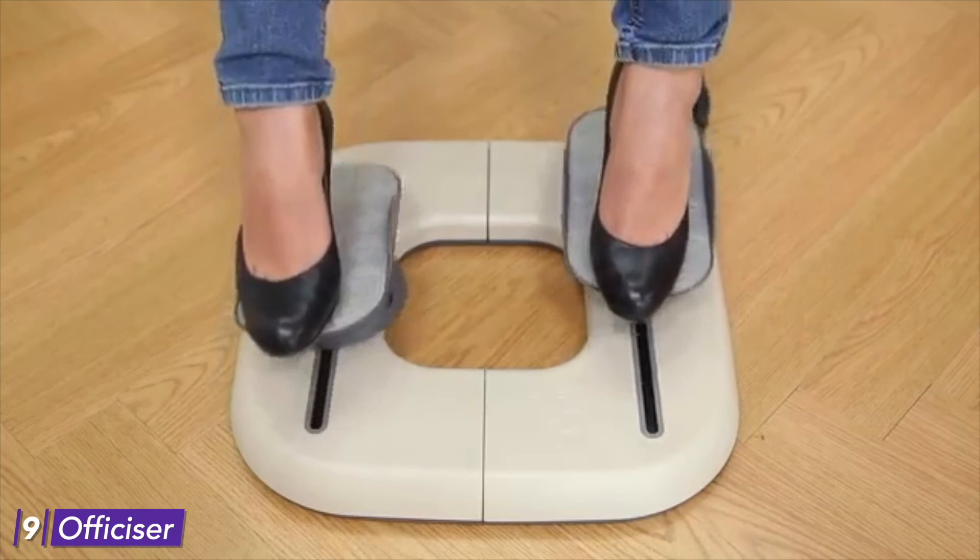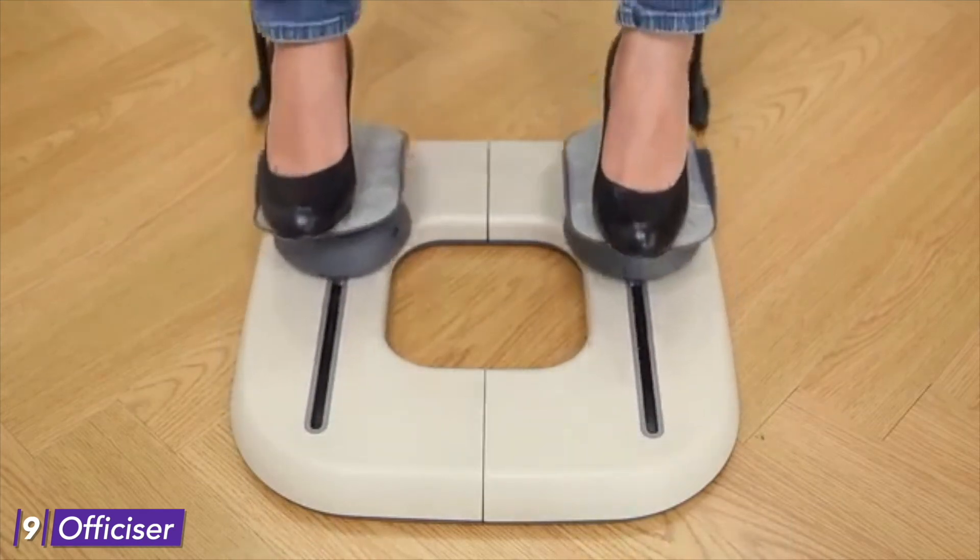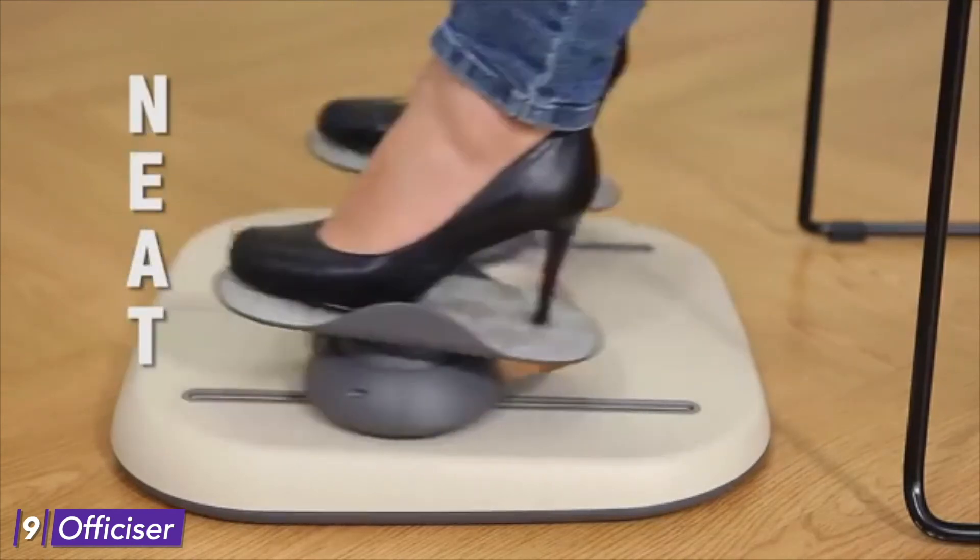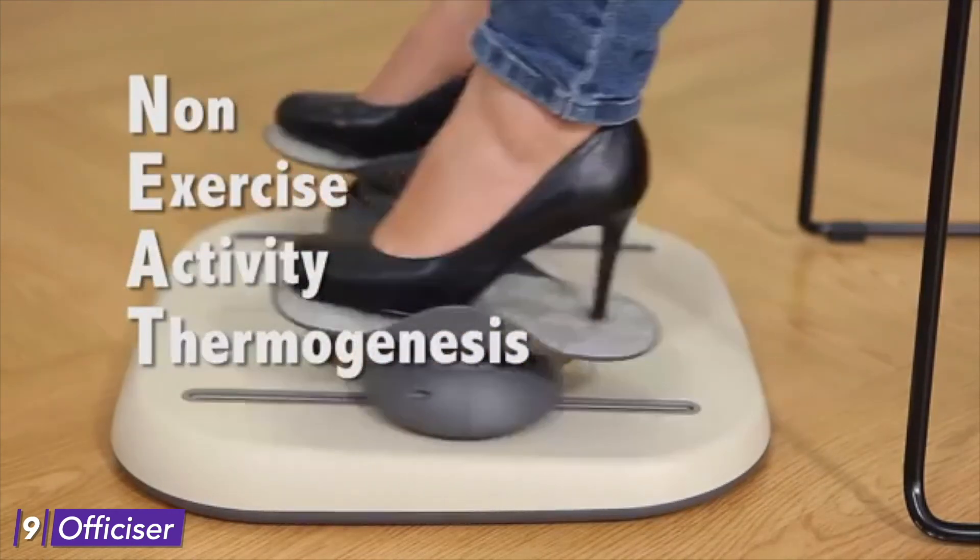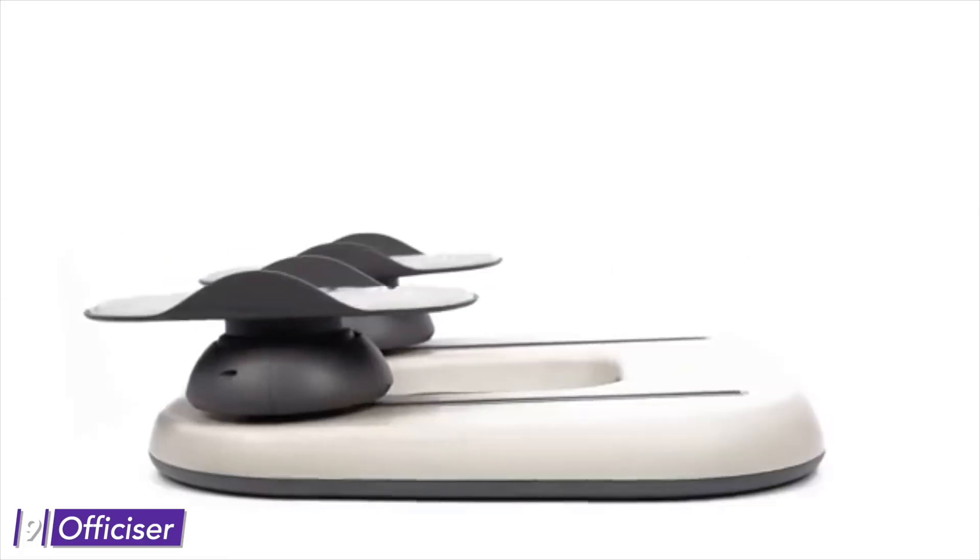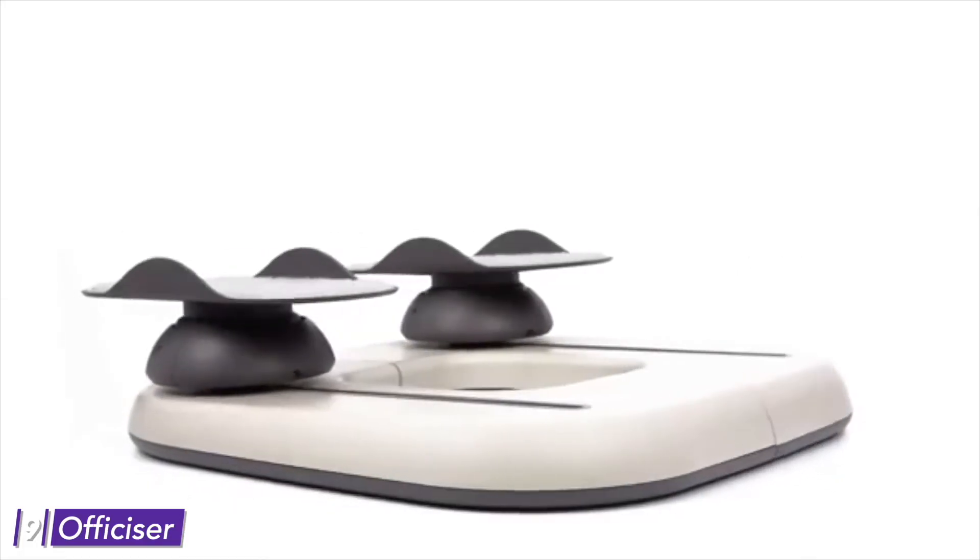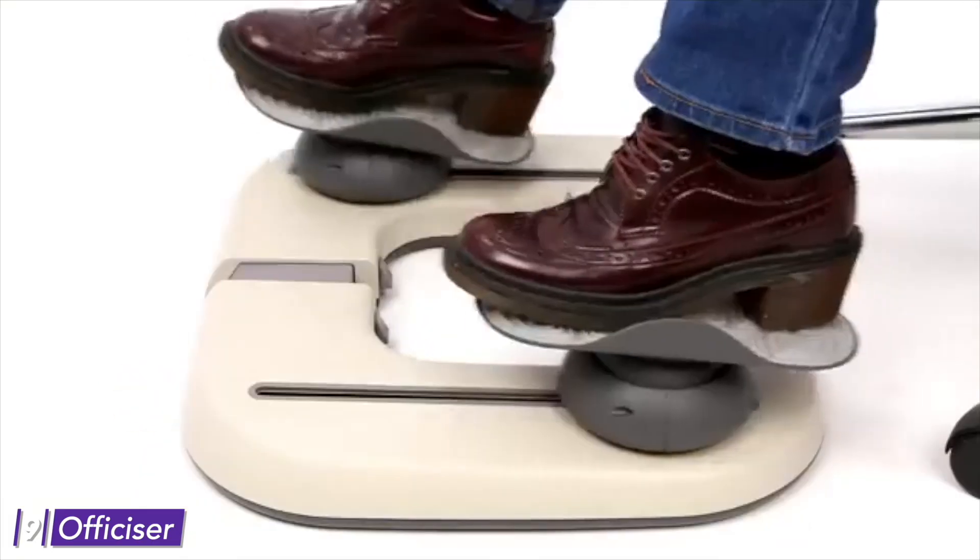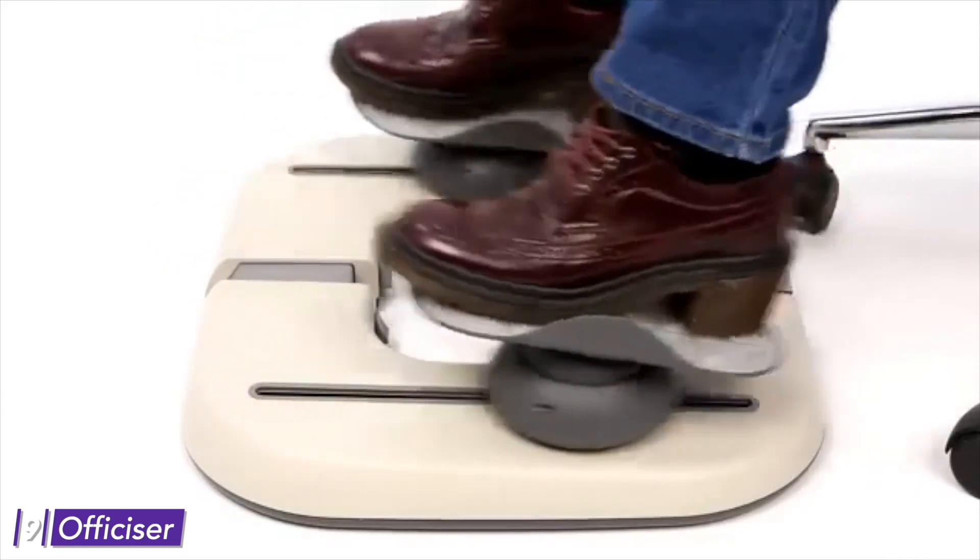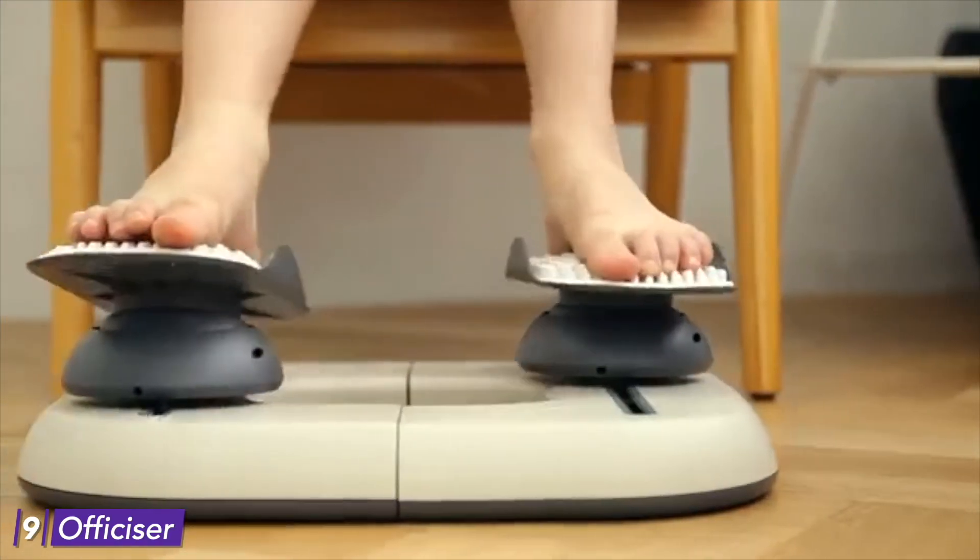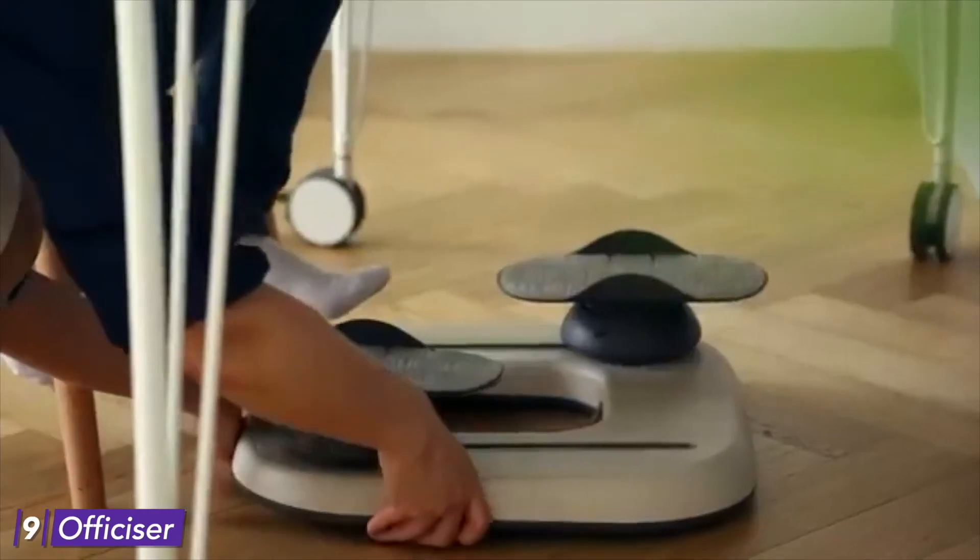Benefits. It helps you to keep you in shape, helps blood flow, burns calories, improves posture, easy on joints, reduces leg swelling and stiffness, and gives a workout experience. Functioning. Officeizer is a device that sits under your table and allows you to stimulate a walking experience without moving. It can be used by placing your feet on the unit and sliding them back and forth or rock them side to side.